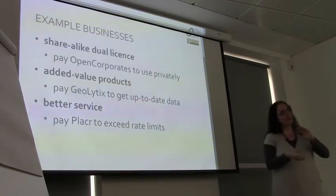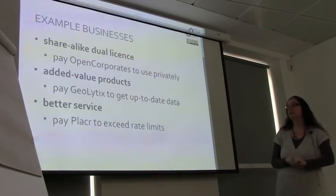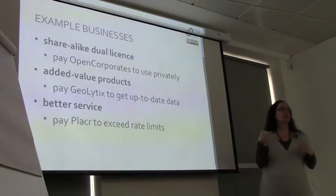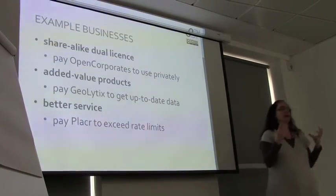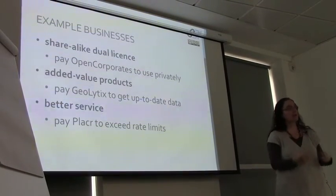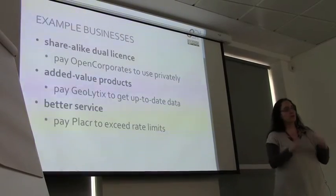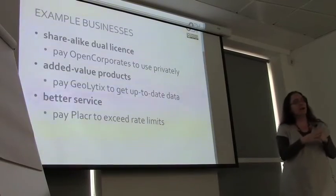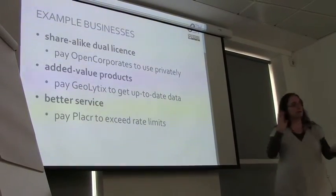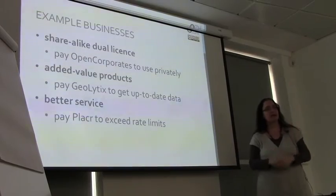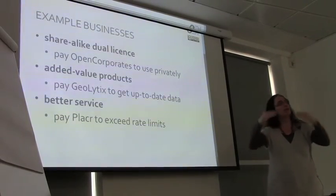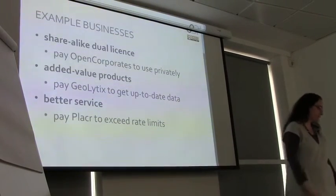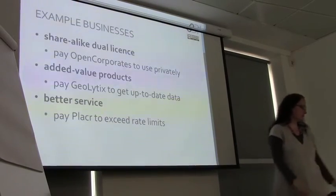Another way to do the freemium model is to provide a better service to those people who are prepared to pay. This is one of the things that Placer do — you can access their API of open data for free, but if you want to go over a certain rate of hits on their API, then you have to start paying. That divides their customer base into those who can access it for free and those who will pay, with an easy on-ramp for people to start paying them.